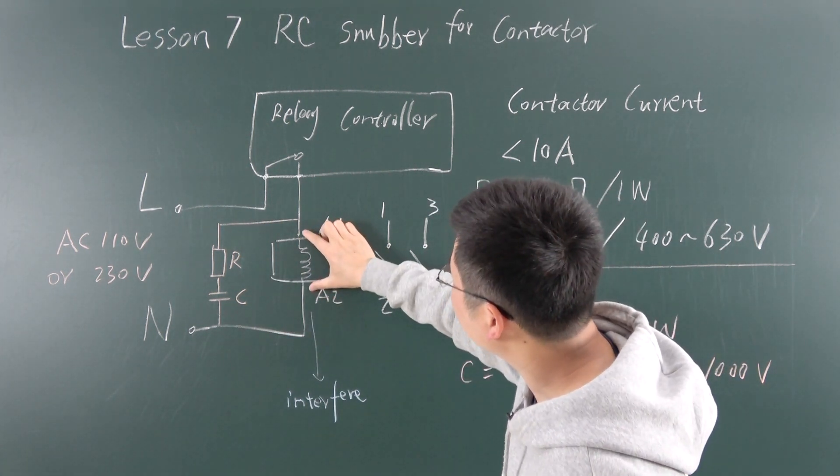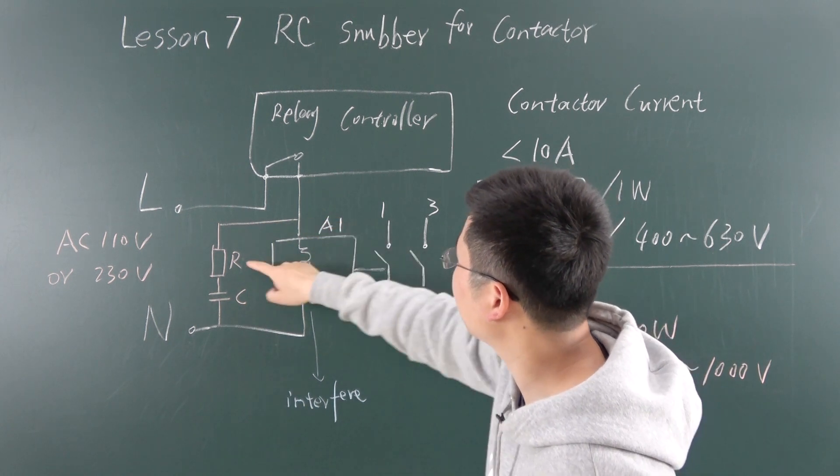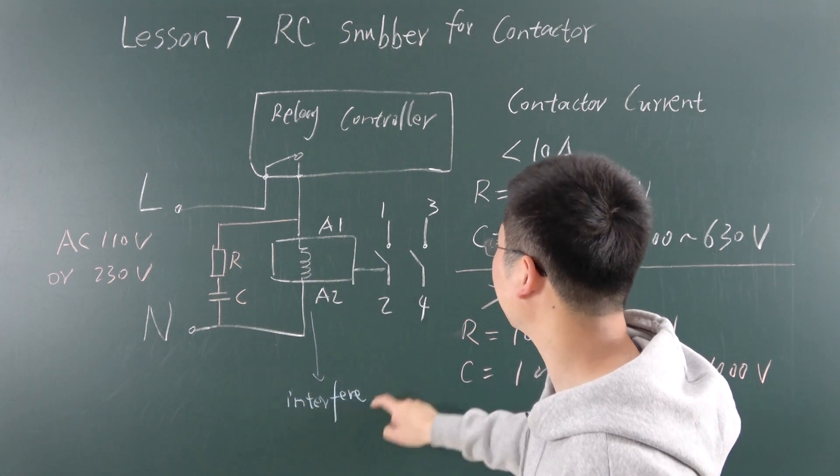So we can just add this R and C beside the coil on two sides, these two points. Just add this R and C.